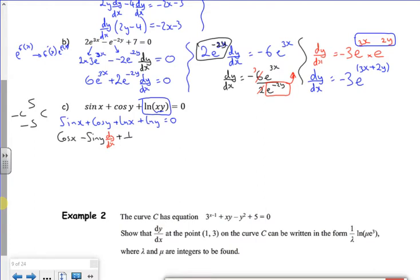Log x becomes 1 over x. Log y becomes 1 over y. But once again, it's the wrong letter. So dy by dx. And that's equal to 0.